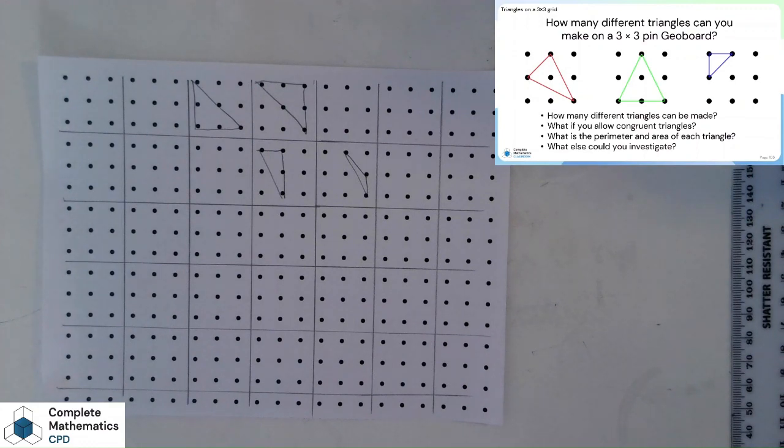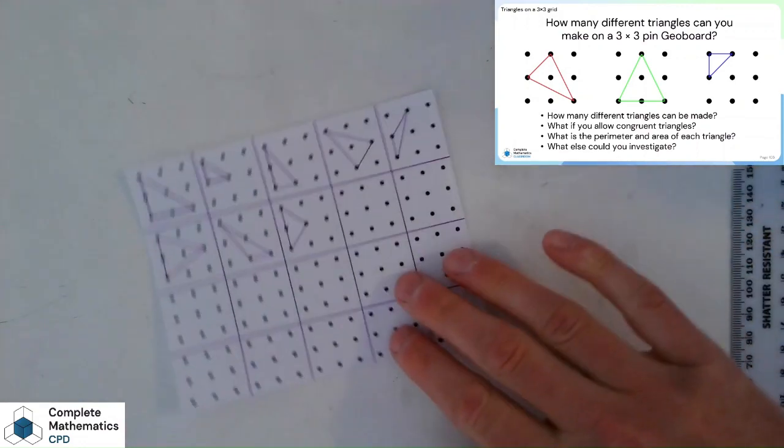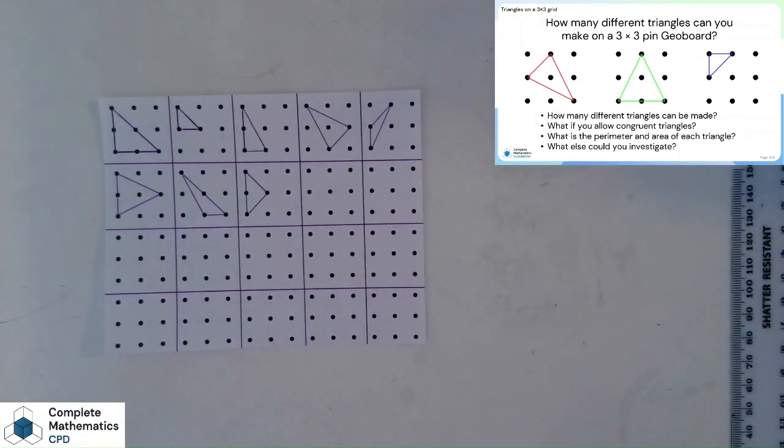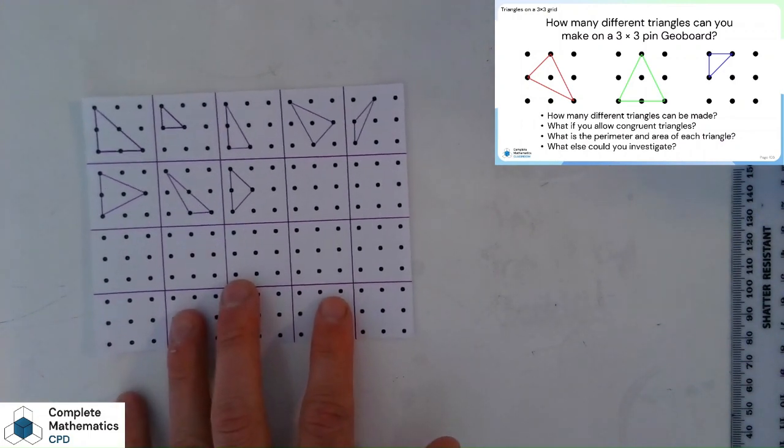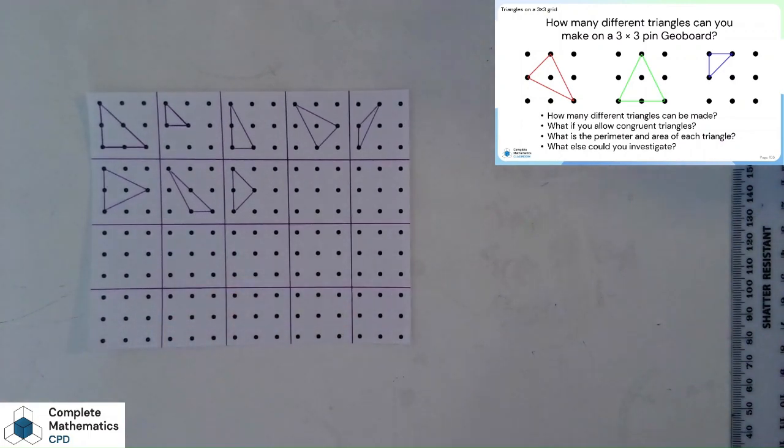And, spoiler alert, here are all the answers. There are eight different ones to find on a 3x3 grid. And then we can identify each of these types, isosceles, right angle, and so on. And why aren't any of them equilateral is another question you can investigate.